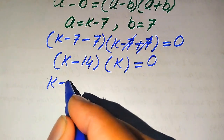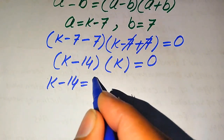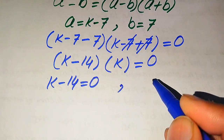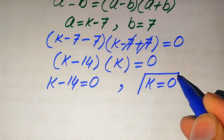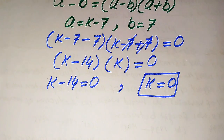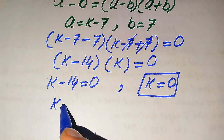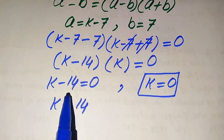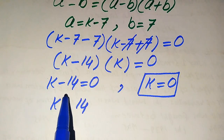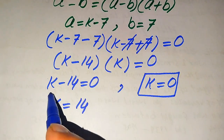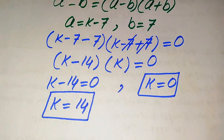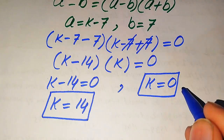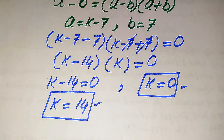We divide this equation into two cases. The first case: k minus 14 equals 0, and the second case: k equals 0. From the first case, we get k equals 14 because when we move negative 14 to the right-hand side it becomes positive 14. So from the first method we get two values of k: 0 and 14.